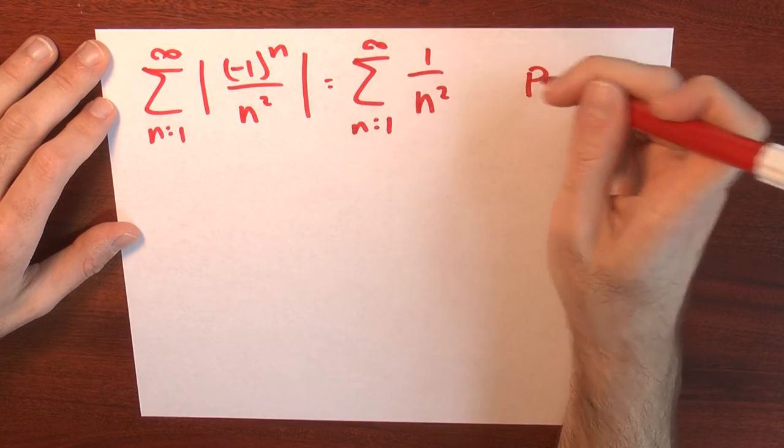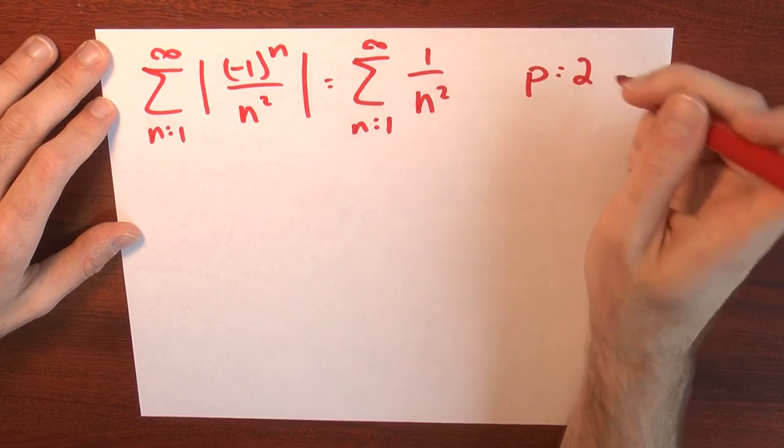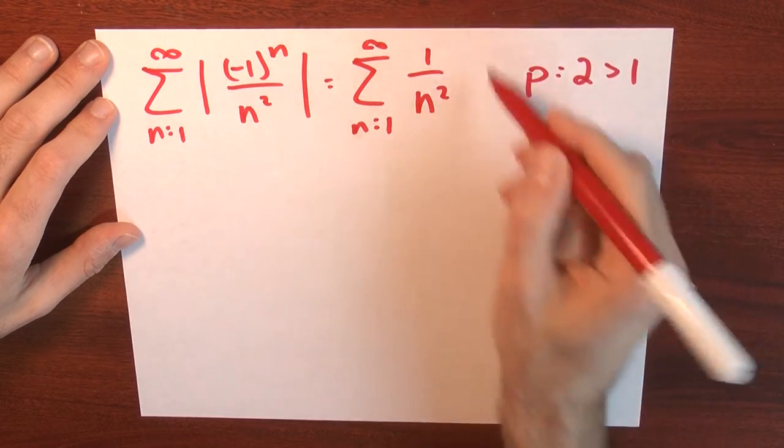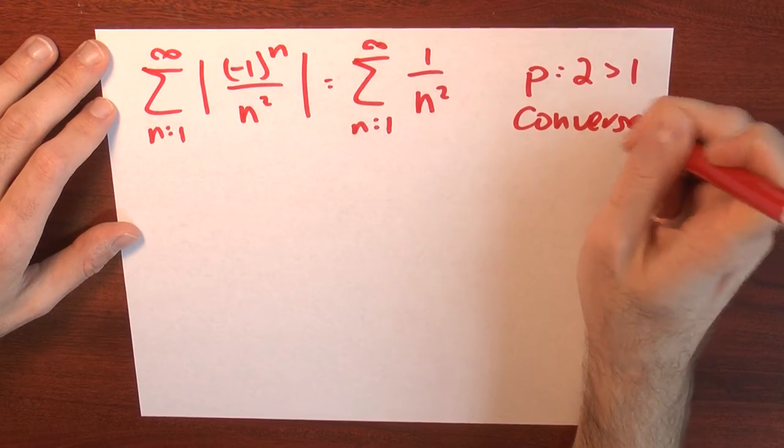And that's a p series with p equals 2. And because 2 is bigger than 1, this p series converges.